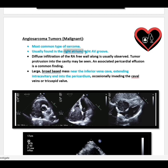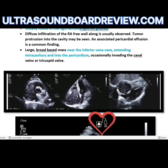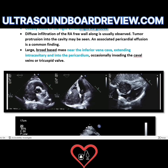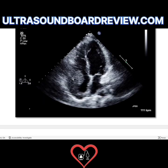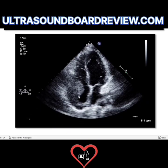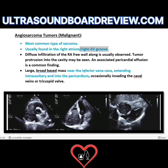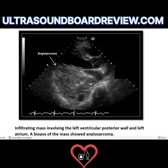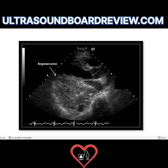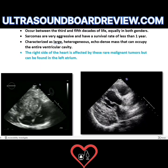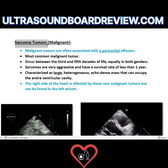Angiosarcoma is the most common type of sarcoma and is typically found in the right atrium or the right AV groove. You can see this tumor has completely taken over the right atrium in the short axis view at the aortic valve level, as well as in the subcostal view. Notice the heterogeneous texture. These tumors are usually large and near the inferior vena cava but not in it. This angiosarcoma has infiltrated the posterior wall. Usually they're found on the right side, but it's not uncommon for them to be on the left. Sarcoma tumors are the most common moving tumors in adults.